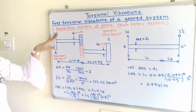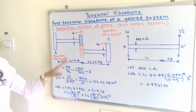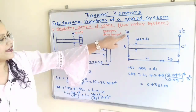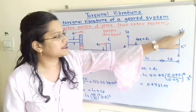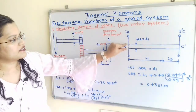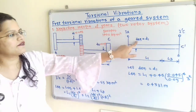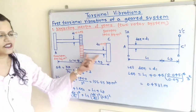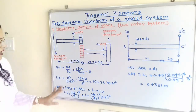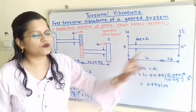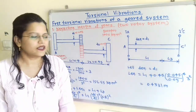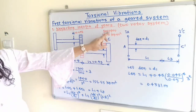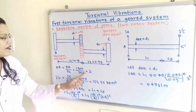The inertia of gears is neglected, so we treat this as a two-rotor equivalent system showing Ia for rotor A and I'C for rotor C. D equivalent is assumed equal to D1. The equivalent length has two parts: LQ1 = L1 and LQ2 = L3. The gear ratio GR equals Na / Nc = 1500 / 500 = 3.